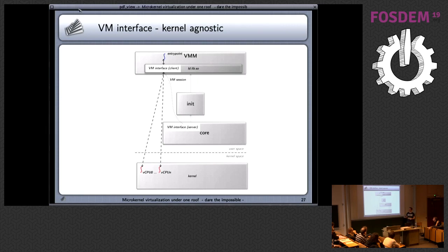From the picture, we have some freedom to decide where to implement things, depending heavily on the kernel interface and how nicely we can hide kernel-specific details. In this picture, the kernel-specific task must be implemented specifically, and the library implementation is also kernel-specific. For Nova, Fiasco OC, and seL4, the delivery of exits goes directly to the virtual machine monitor.